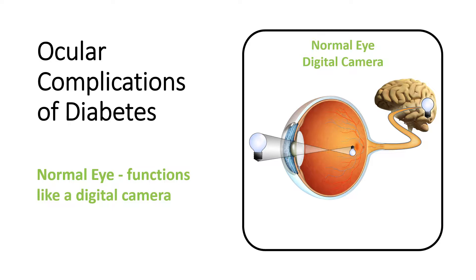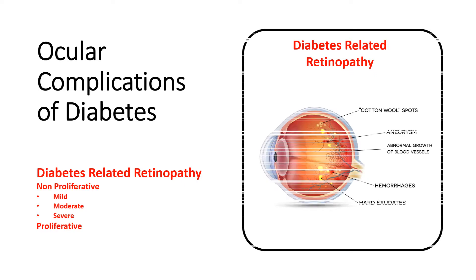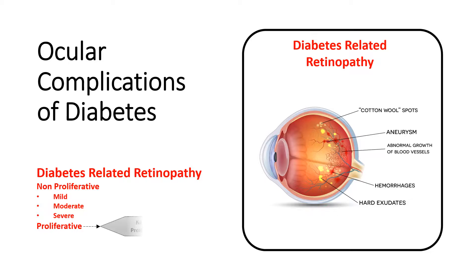The eye is the only organ of the body where the complications of diabetes can be seen as they progress. Chronic hyperglycemia causes a breakdown of retinal vascular, neural, and supporting glial and immune cells. This slide illustrates clinical findings found in non-proliferative and proliferative retinopathy.